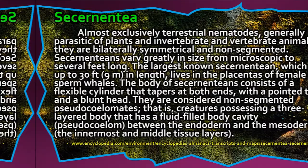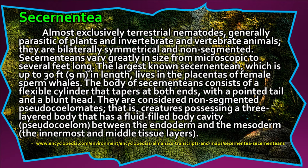Secernentea are almost exclusively terrestrial nematodes, generally parasitic of plants and invertebrate and vertebrate animals. They are bilaterally symmetrical and non-segmented, and vary greatly in size from microscopic to several feet long. The largest known Secernentean, up to 30 feet in length, lives in the placentas of female sperm whales. The body consists of a flexible cylinder that tapers at both ends, with a pointed tail and a blunt head. They are considered non-segmented pseudocoelomates, possessing a three-layered body with a fluid-filled body cavity (pseudocoelom) between the endoderm and the mesoderm.